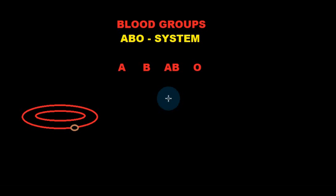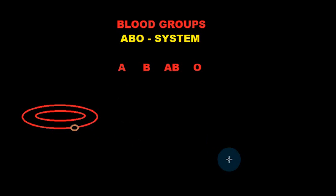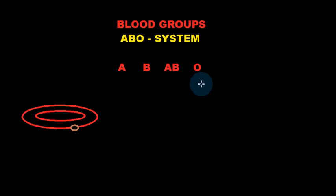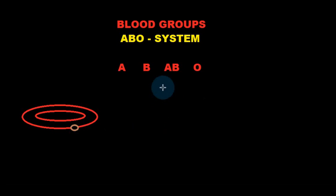Another thing to note, more specifically towards people who are blood group AB and people who are blood group O, is that people who are blood group O are known as universal donators of blood. This is because their red blood cells don't have antigen A or antigen B, so when blood is donated to another blood group — for example A or B — the antibodies within that blood group aren't going to attack the red blood cells from the O blood group, because there's no antigen A or antigen B, so the antibodies in the other blood group won't attack it.